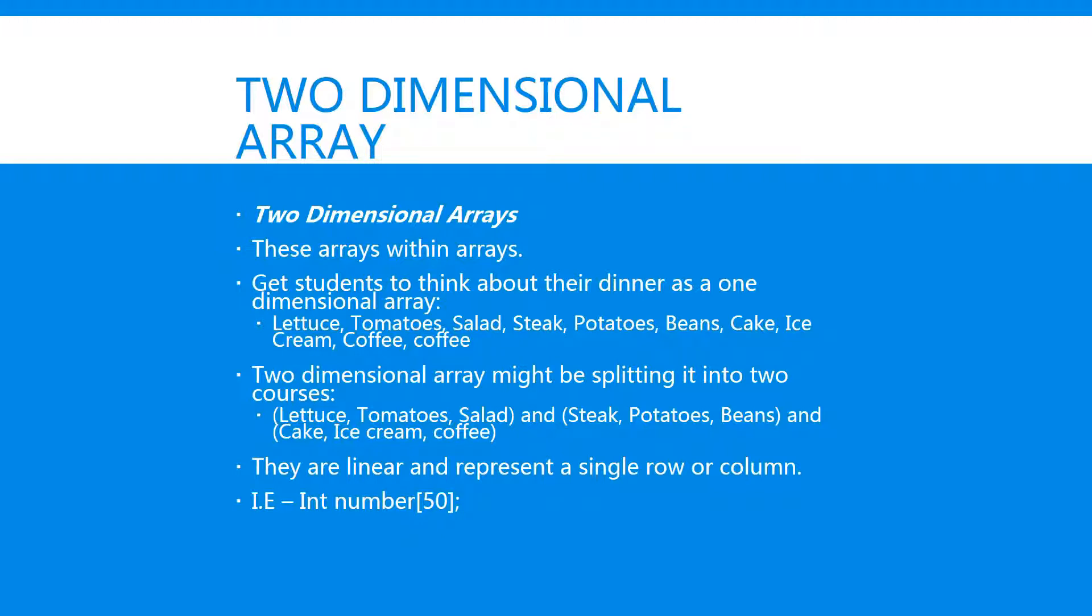If it was a single array I'd have everything listed together, but in a two-dimensional array you might split it into two. So you've got lettuce, tomato, and salad that will be on the top row zero, like part of your course.